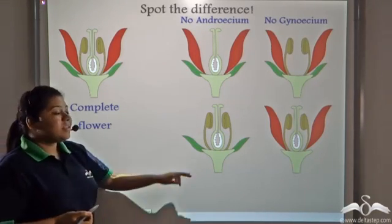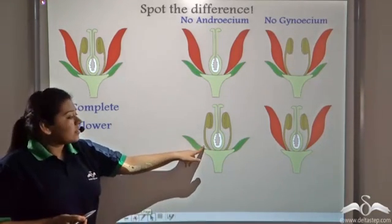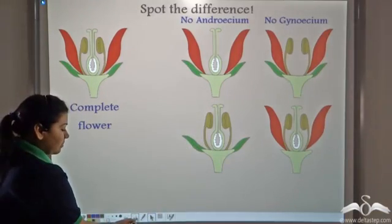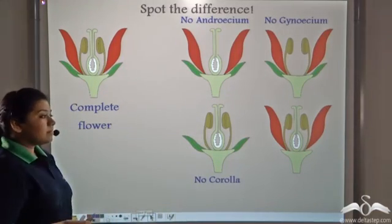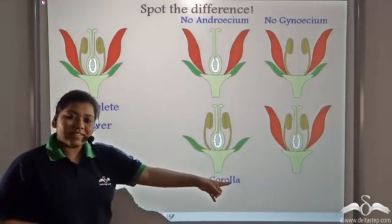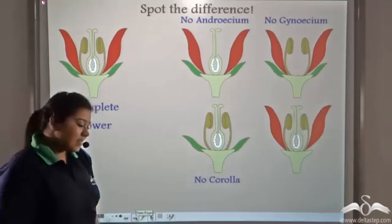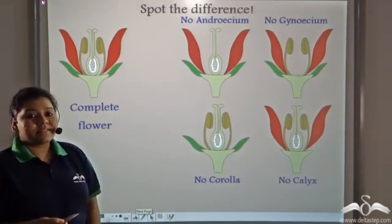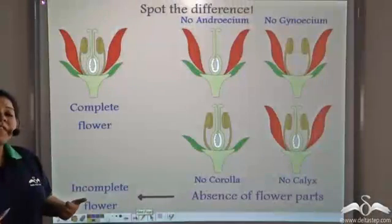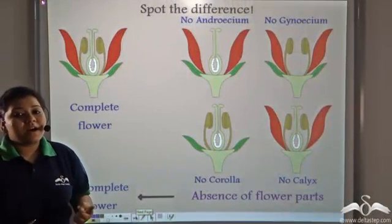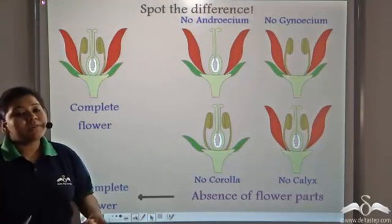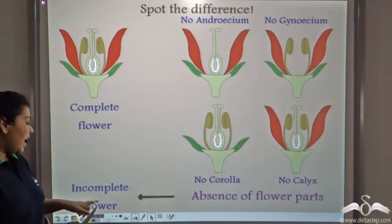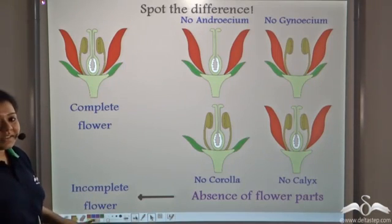In the third flower, the corolla is missing. And in the fourth, the calyx is missing. So, if a flower does not have one or more than one part, it is known as an incomplete flower.